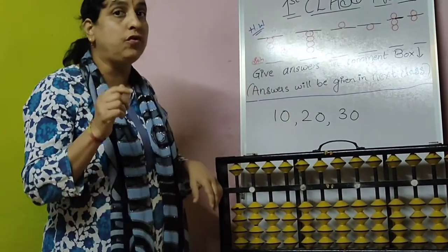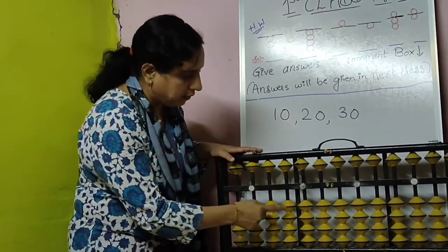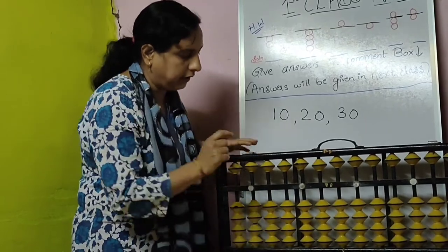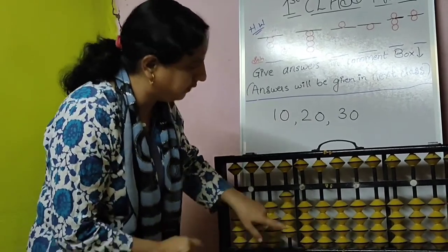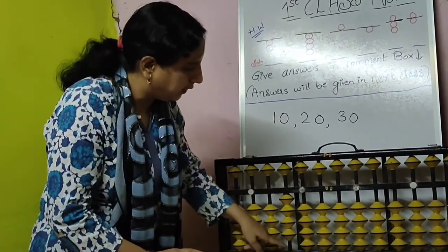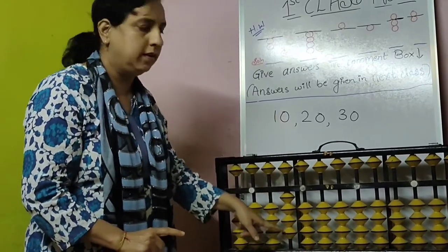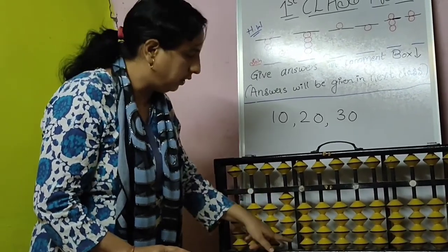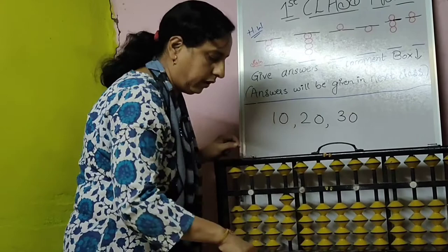Forty — how to do forty? Four beads — ten, twenty, thirty, forty. By this index finger, raise all this, touch the divider. All the beads — forty: 4, 0 — forty.